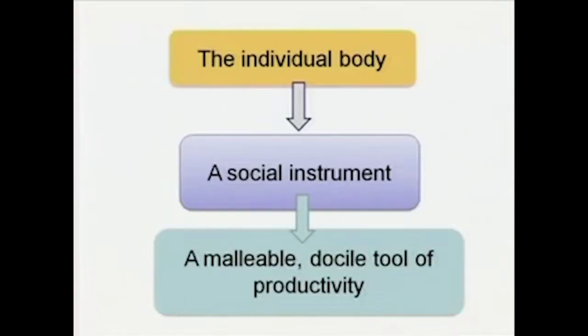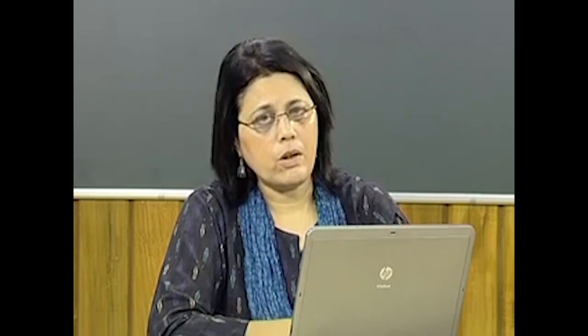Cultural studies also looks at the body. The individual body is not isolated — it is not an individual body in the sense that the body becomes a social instrument. We are cultural beings, we are in a body. The scope of cultural studies includes looking at the body as a cultural instrument and, as philosopher Michel Foucault has said, as a docile and malleable tool of productivity. Beginning with biology and the body, we find that cultural studies also encompasses looking at the body as a cultural form, not simply as a biological form.